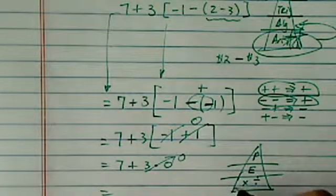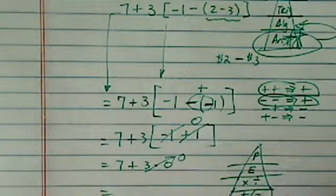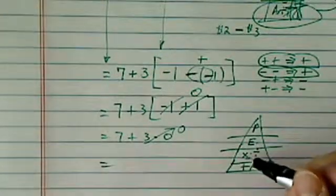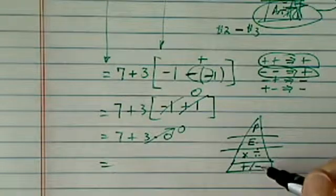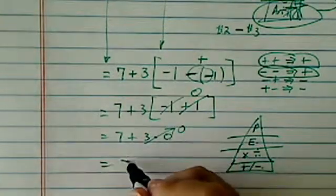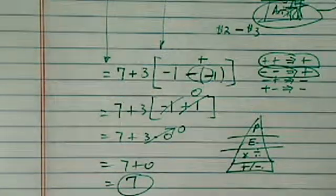One more, and subtract. Please excuse my dear Aunt Sally. So 7 plus 0 is 7. So, answer is 7.